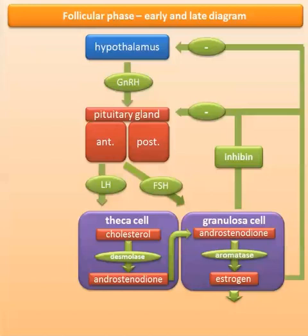These anterior pituitary gonadotropins act on their respective ovarian cells — LH working on the theca cell and FSH on the granulosa cell. Since we're in the follicular phase, the goal of the first 14 days of the cycle is to prepare for ovulation: developing one ovarian follicle to maturity and getting the endometrium and myometrium ready.